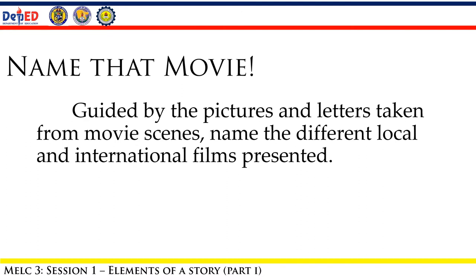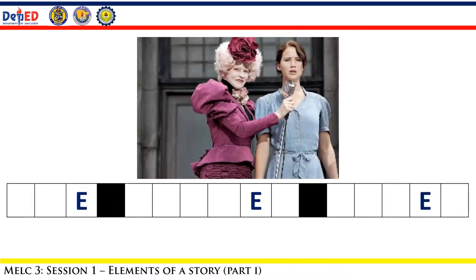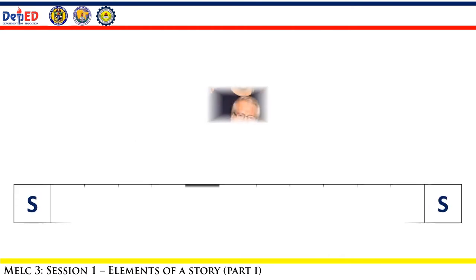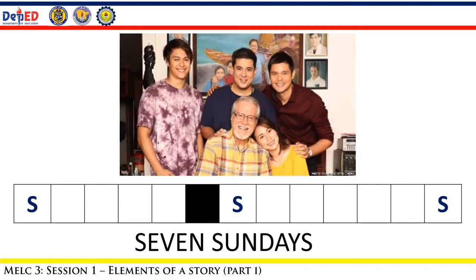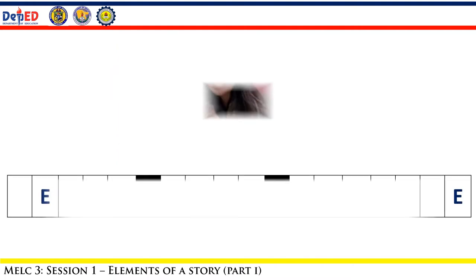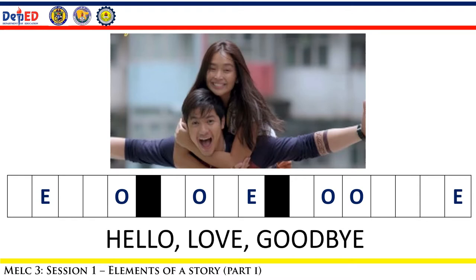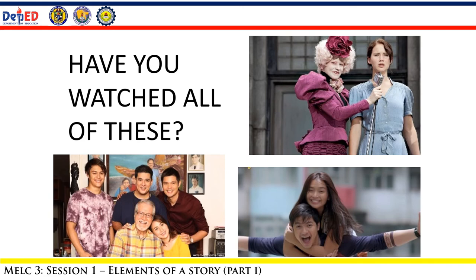Before we go further with our lesson, let's have this activity entitled 'Name That Movie.' Be guided by the pictures and letters taken from the movie scenes to name the different local and international films presented. The first one — if your answer is The Hunger Games, you are correct. The second one — if you answered Seven Sundays, then you are right. And now the last one — if you answered Hello Love Goodbye, then you are correct.